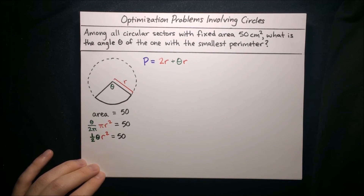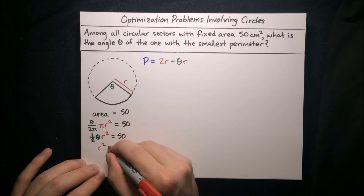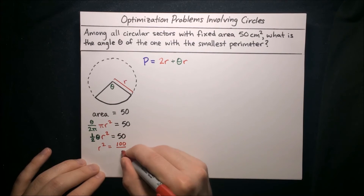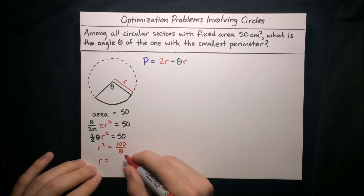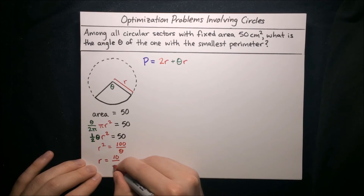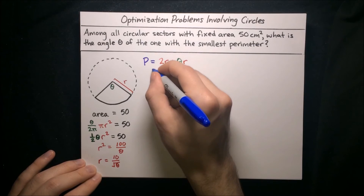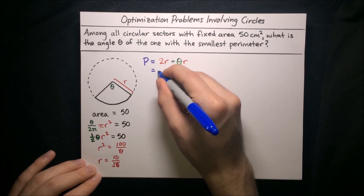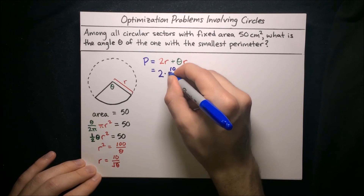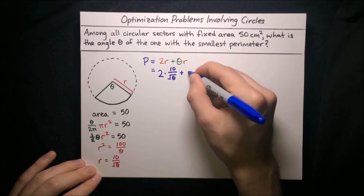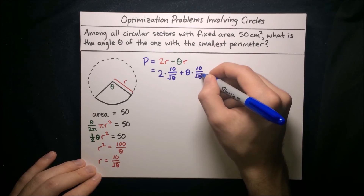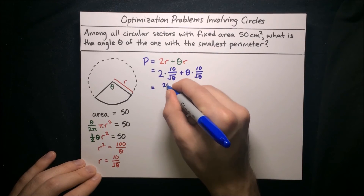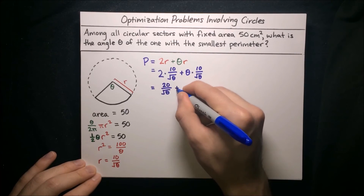We solve for r in terms of theta: multiply both sides by 2 and divide by theta to get r squared equals 100 over theta, then take the square root to get r equals 10 over the square root of theta. Plugging back into the perimeter: 2 times 10 over root theta, plus theta times 10 over root theta, which simplifies to P equals 20 over root theta plus 10 root theta.